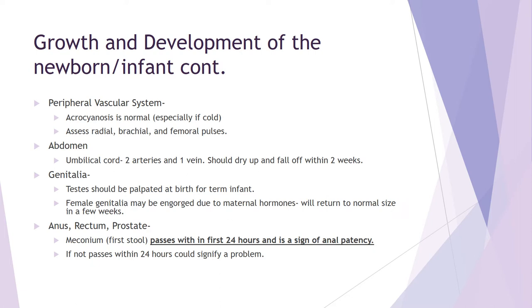The umbilical cord has two arteries and one vein. It typically dries up and falls off within about two weeks. The biggest teaching point is to leave it alone — no alcohol on it. Keep it dry, clean, and away from irritation or rubbing. Sometimes the diaper can rub up against it; you can teach parents to fold the diaper down for the first couple of weeks until it's completely gone.